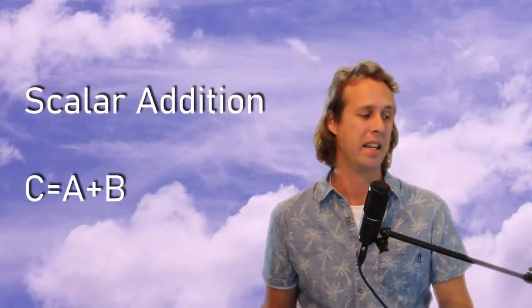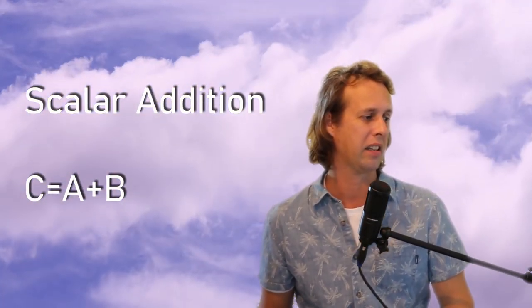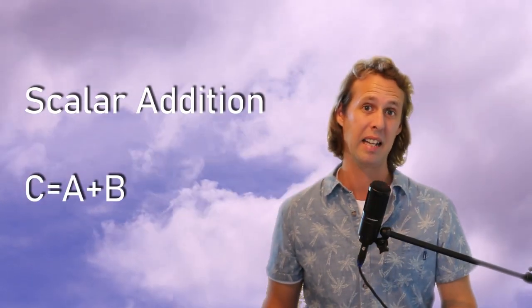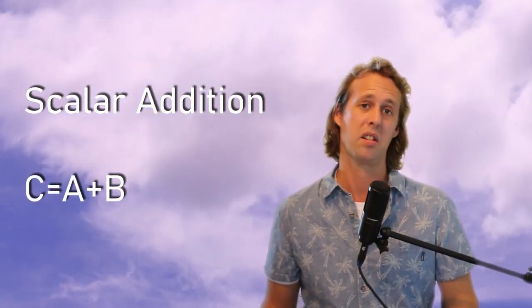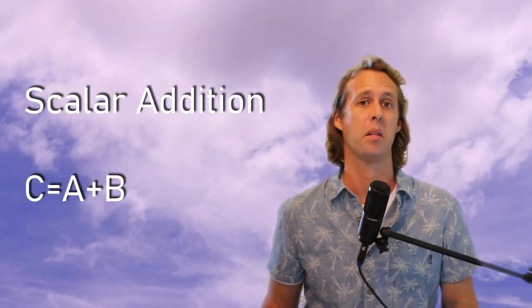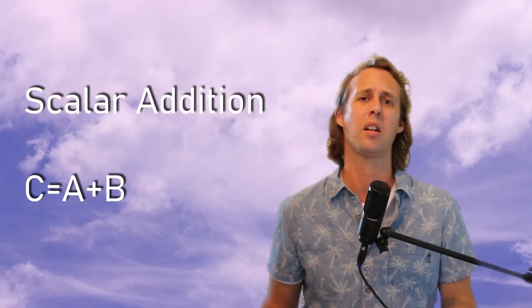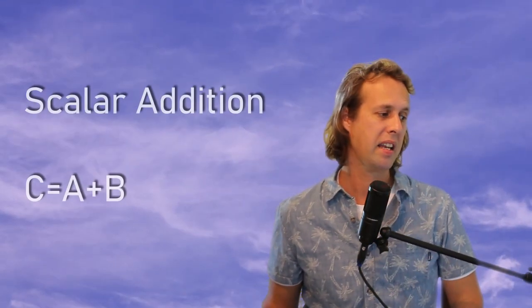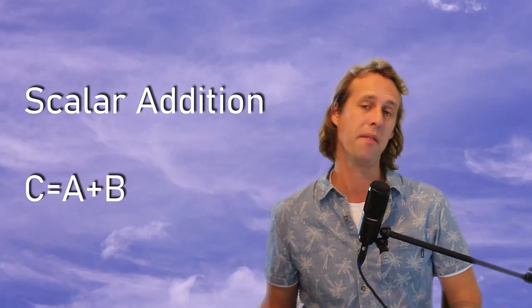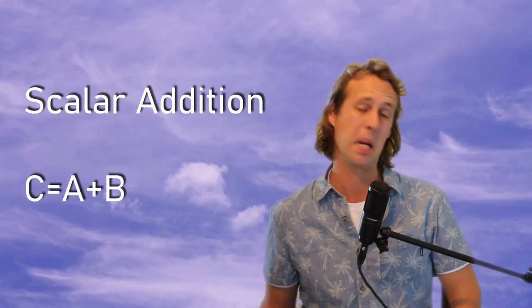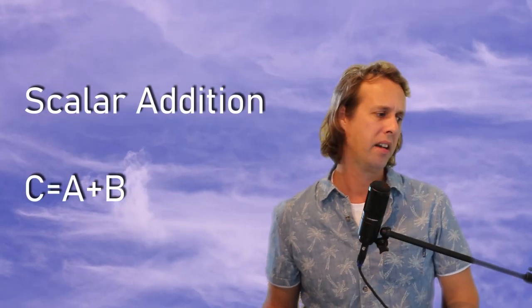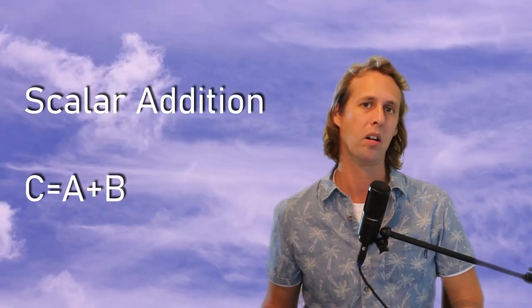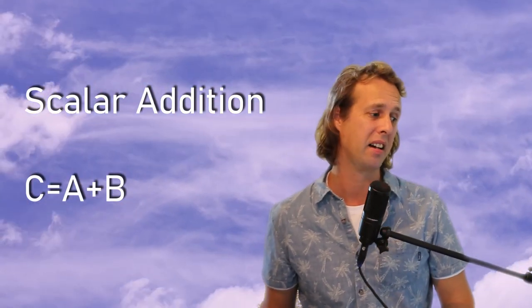Let's have a look at exactly what SIMD is. Here we have an illustration of scalar, or normal, addition. Scalar just means one data element — this is the regular way we tend to code in C++ or many other languages. If we add variable A to variable B, we end up with variable C. We're only performing one operation there, so that's a scalar operation.